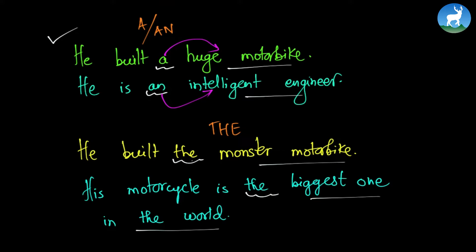In the second part of the examples, we are being specific. When we say he built the monster motorbike, that monster motorbike is really special. No one in the world has created a motorbike as big as Dunham's — it is 6.2 meters in length, weighs around 2,948 kilograms, stands 3.4 meters tall, and speeds up to 104 kilometers an hour. It really is a monster motorbike. That's why we use the noun phrase 'monster motorbike.'